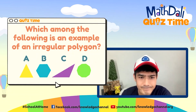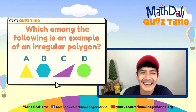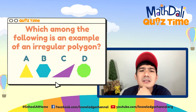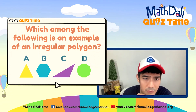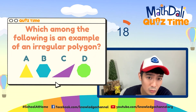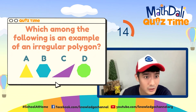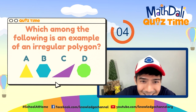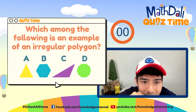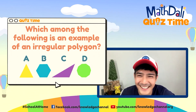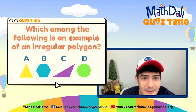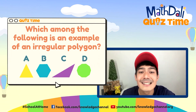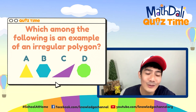Let's move on to Question Number Three. Which among the following is an example of an irregular polygon — is it A, B, C, or D? 20 seconds, go. Letter A: 1, 2, 3, 4, 5, 6 — this is an example of a regular hexagon. Letter B: 1, 2, 3, 4, 5, 6, 7, 8 — it's 8 sides. Time is up. The answer is C — irregular polygon. Unang tingin pa lang, kita mo agad na may something. It is a triangle.